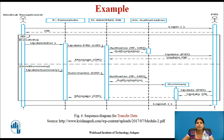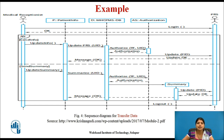This is the second example of a sequence diagram from the same system, illustrating two additional features: direct communication between actors and objects as part of a sequence of operations. In this example, there are five actors listed along the top of the diagram: medical receptionist, patient info, MHC-PMS, authorization, and PRS.